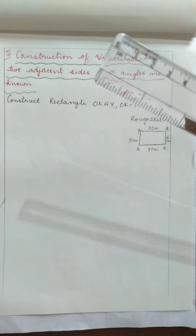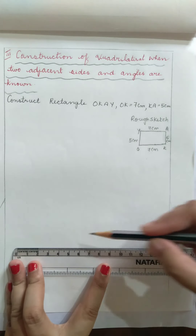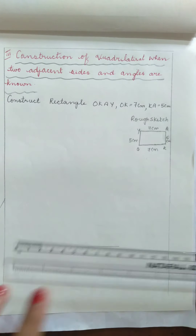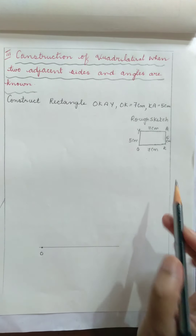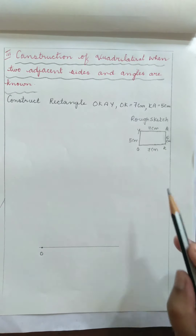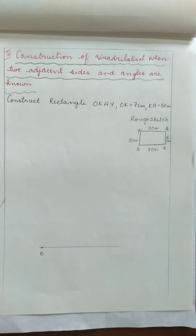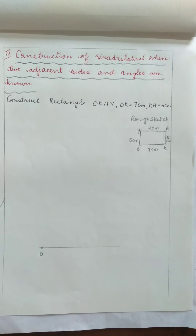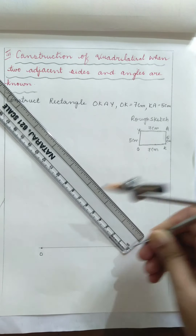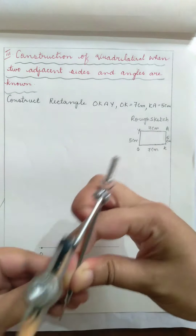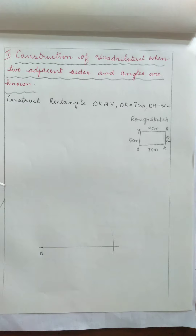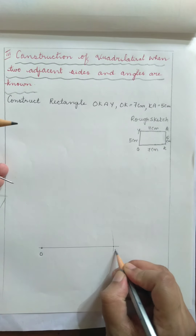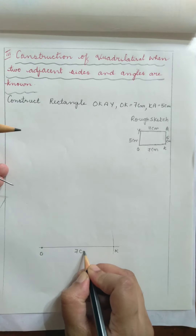First, use your scale and draw a straight line. Mark the point as O. OK is equal to 7 cm, which is given in the problem. Use your compass and measure 7 cm on the scale. Keep the compass at point O, cut the arc on the straight line, then mark this point as K. OK will be equal to 7 cm.